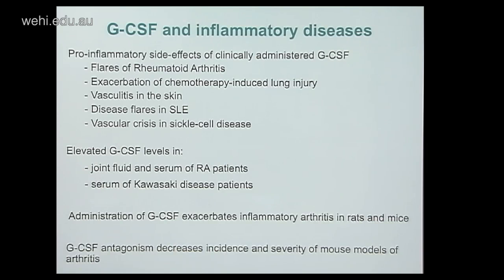GCSF has been linked to several inflammatory diseases. It's often administered to mobilise stem cells from the bone marrow prior to a stem cell transplant. Pro-inflammatory side effects of clinical GCSF administration include flares of rheumatoid arthritis and disease flares in SLE. Elevated GCSF levels have been seen in joint fluid and serum of RA patients and Kawasaki's disease patients. In rodent models, GCSF exacerbates inflammatory arthritis, and work in the WEHI lab showed that GCSF antagonism decreases incidence and severity of mouse models of arthritis.